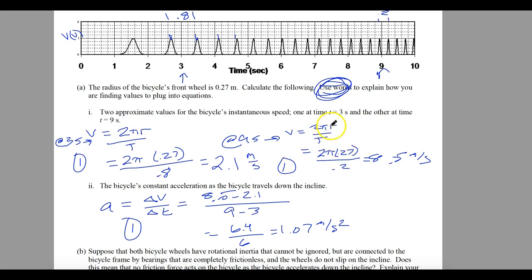And then the instantaneous velocity at 9 seconds, same equation, same radius, but now our time is a lot shorter. And so this one is 8.5 meters per second. You'll notice the key that is posted, the printed key, is not right. So that's why you want to watch the videos.